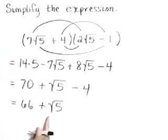Now stop there. These terms are not alike. Don't combine them. This is the simplified form: 66 plus the square root of 5.